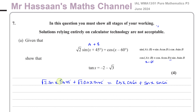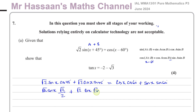Now let's substitute the exact values. Cosine 45 is root 2 over 2, and sine 45 is also root 2 over 2. So we have: root 2 times (sine x times root 2 over 2 plus cosine x times root 2 over 2) equals cosine 60 is a half, so half times cosine x, plus sine 60 is root 3 over 2, so root 3 over 2 times sine x.